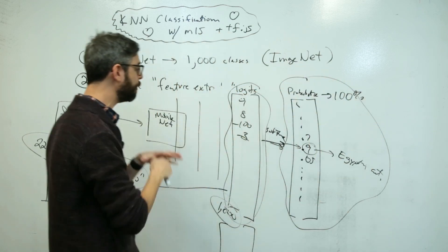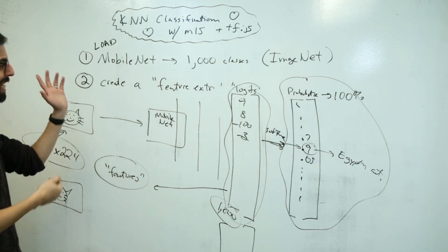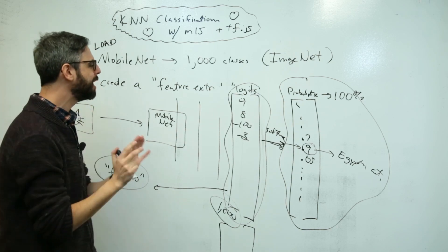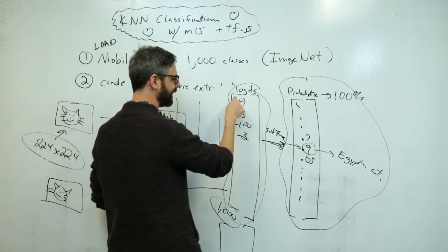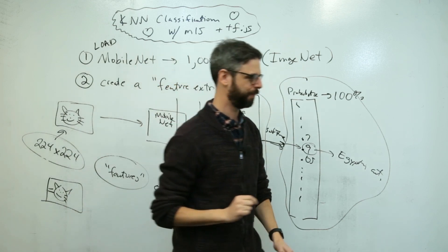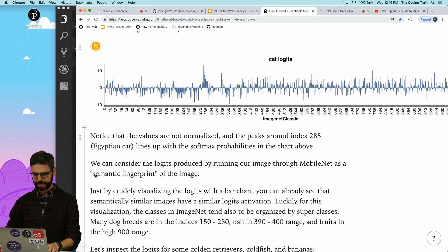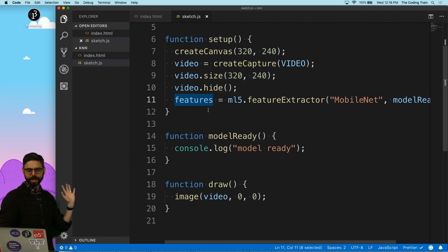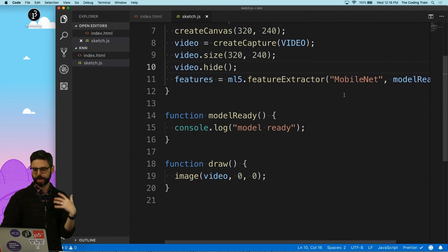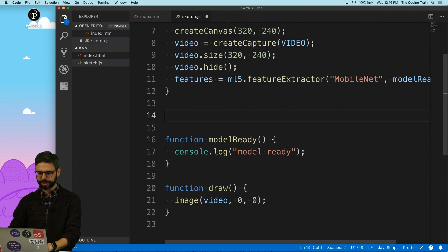If we get the logits for an image, I could say, what other images have I seen previously that this semantic fingerprint is very similar to? Then this image is within that category. That's K nearest neighbor. Let's actually look and see with ML5 how easy it is to get those logits.